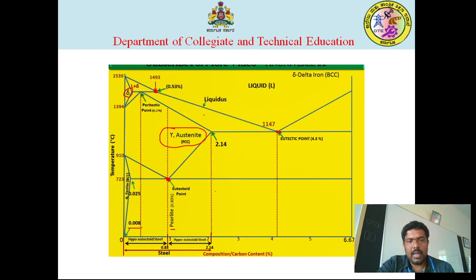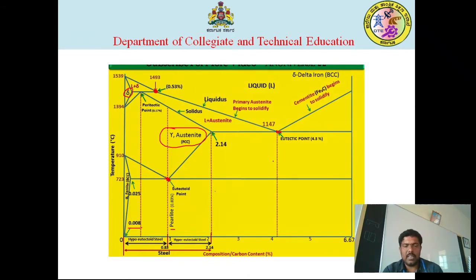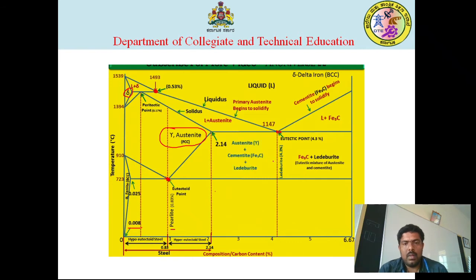The region between these areas is called gamma iron or gamma austenite. Delta iron has a BCC crystal structure. The region below this is alpha iron. You can observe various points — hypo-eutectoid steel, hyper-eutectoid steel — and the reactions that take place here include the eutectoid reaction, eutectic reaction, and the peritectic reaction where liquid and solid convert. The diagram also shows the conversion to liquid plus austenite and many other forms.